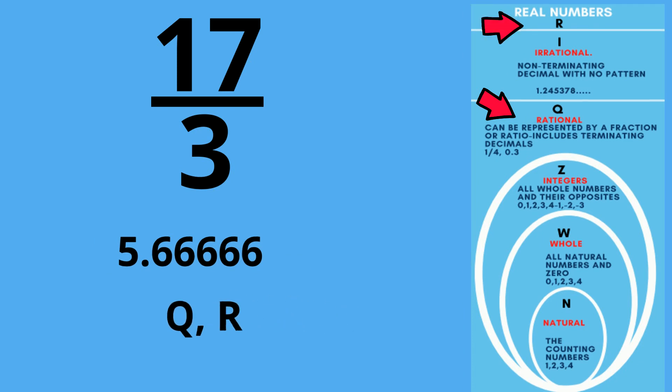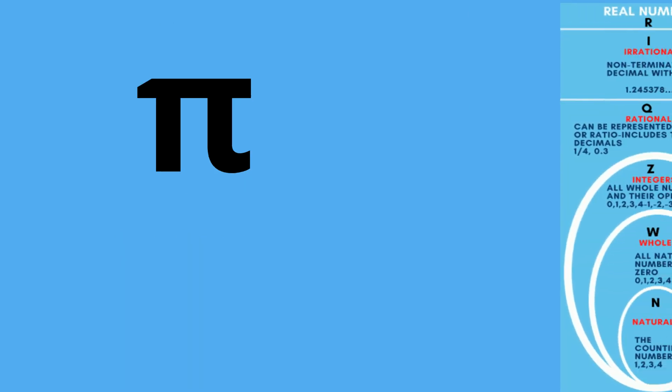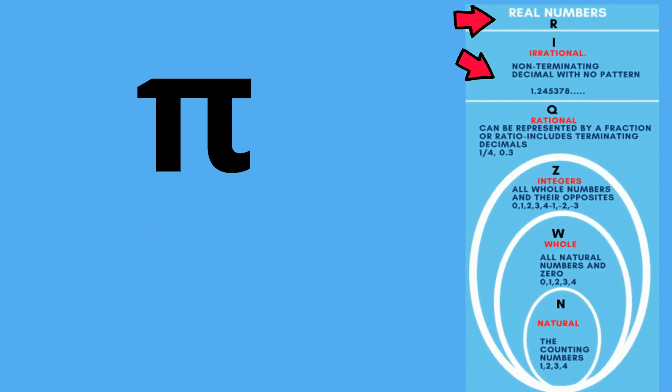Next we have pi. Pi is an irrational number and a real number. So it is I and R, because it is a non-terminating, non-repeating decimal.